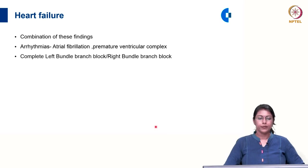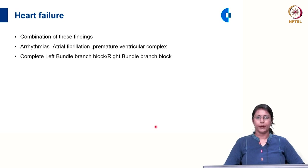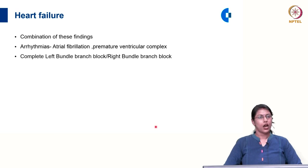In heart failure, you will see a combination of these findings — there may be findings suggestive of left ventricular enlargement, right ventricular enlargement, left atrial abnormality, right atrial abnormality, or any combination. Arrhythmias like atrial fibrillation, premature ventricular complexes, and atrial ectopics may also be present. The patient may also have complete left bundle branch block or right bundle branch block. When these findings are present, we suspect heart failure and need to do an echocardiogram to confirm systolic or diastolic dysfunction.